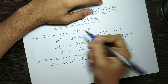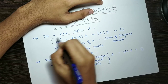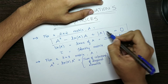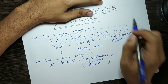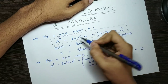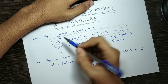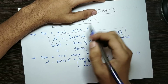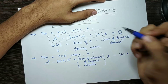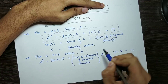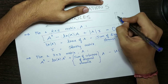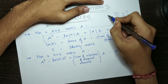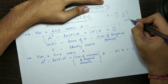For a 2x2 matrix, we have a characteristic equation: A squared minus trace of matrix A into A plus determinant of A into identity matrix equal to 0. This is a quadratic equation, similar to A squared minus Bx plus C, but in matrix form. Trace of A is the sum of diagonal elements. The diagonal elements are 1, 2, 3, 4, so trace of A equals 1 plus 4, which equals 5.